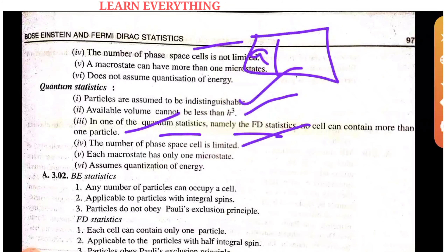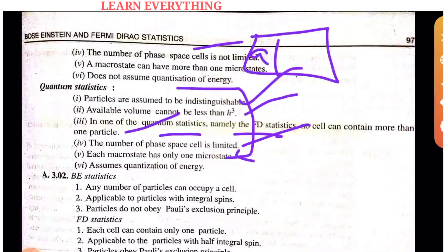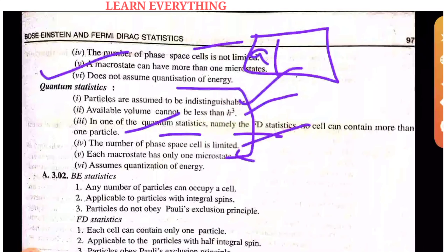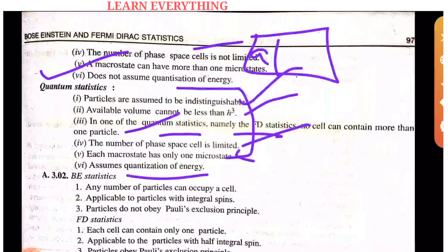The particle is indistinguishable — this defines the macrostate. If we don't deal with quantization of energy in classical statistics, in quantum statistics we do deal with the quantization of energy.